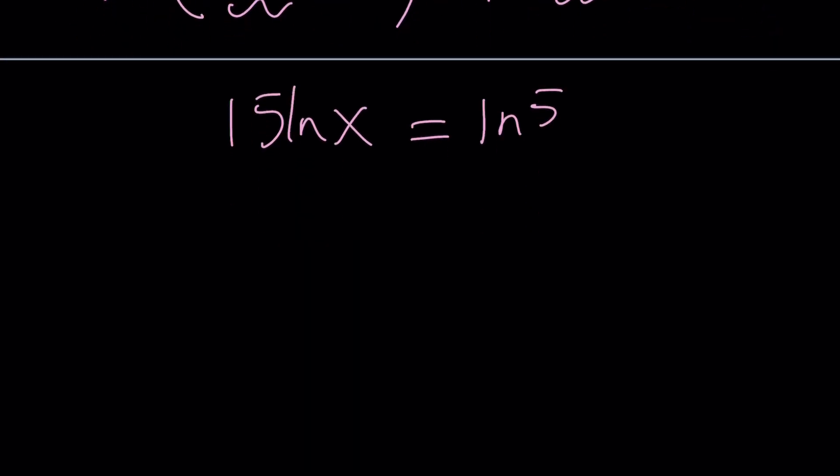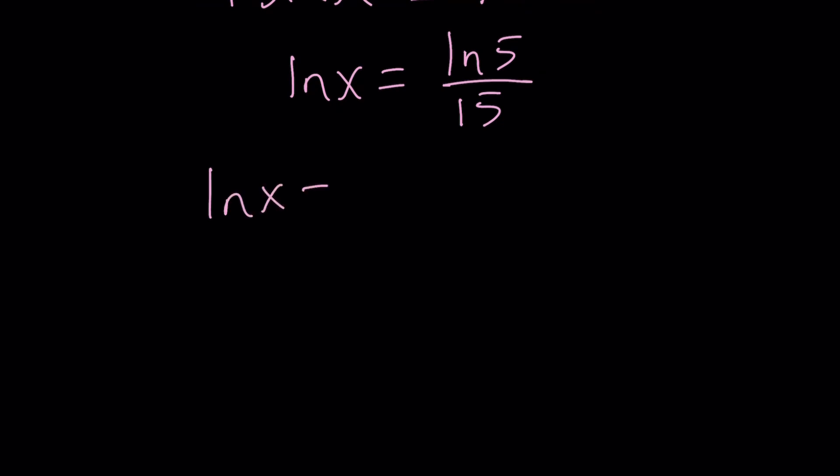And then from here, ln x equals ln 5 over 15. Now how do you solve such a problem, right? Well, you kind of need to make the ln absorb that 15. So first write it as 1 over 15 ln 5. And then this just becomes a power. You kind of need to do the opposite of what we did before. Bring it back as a power. So it's going to be 5 to the power 1 over 15 with the natural log.